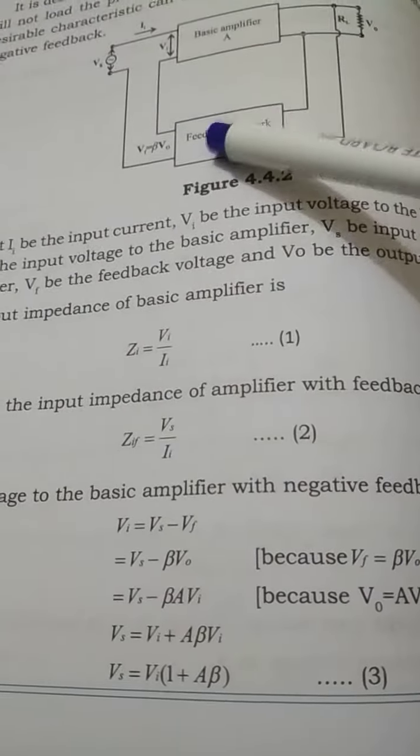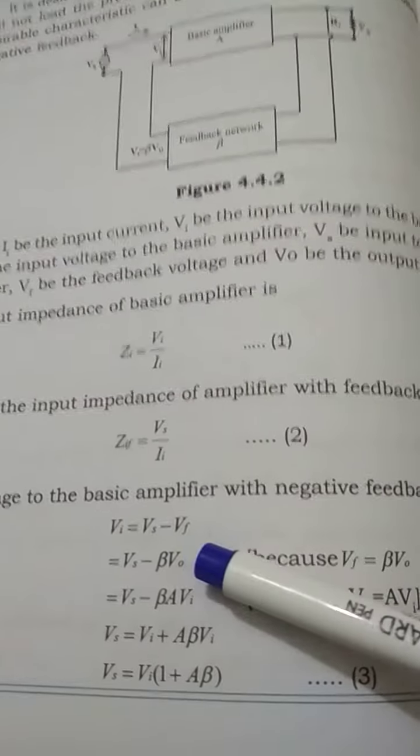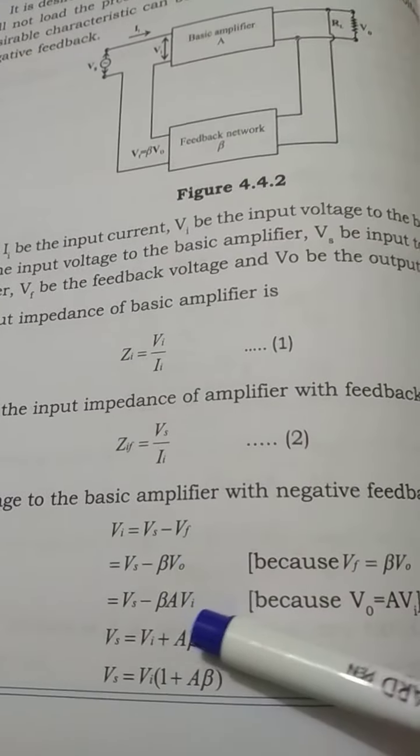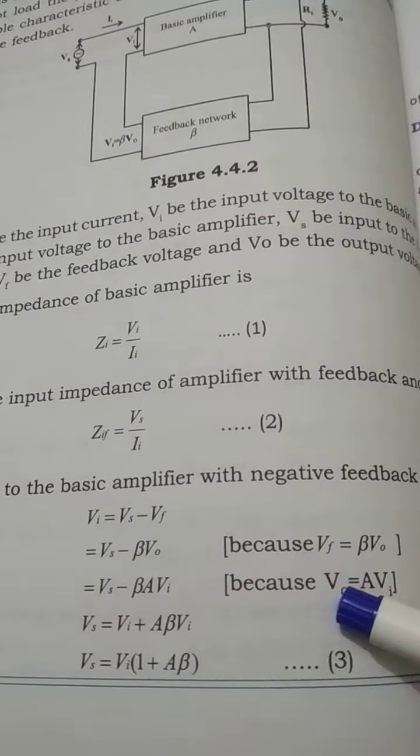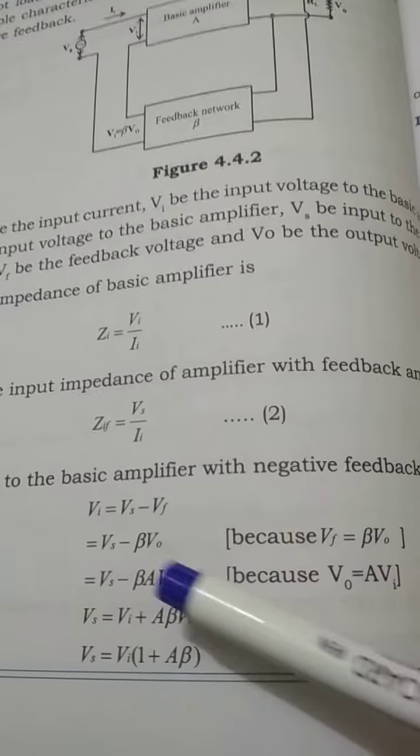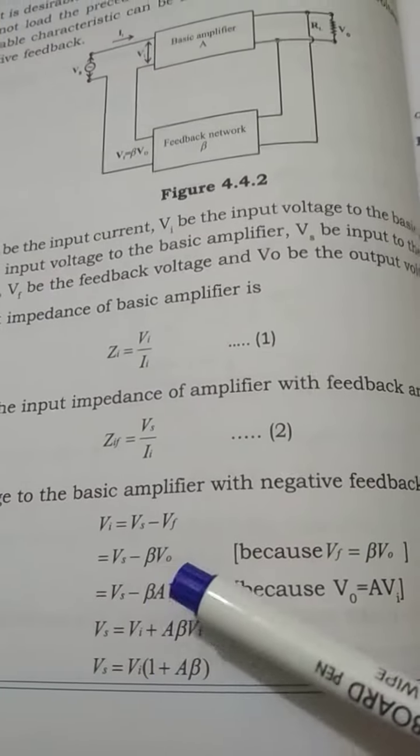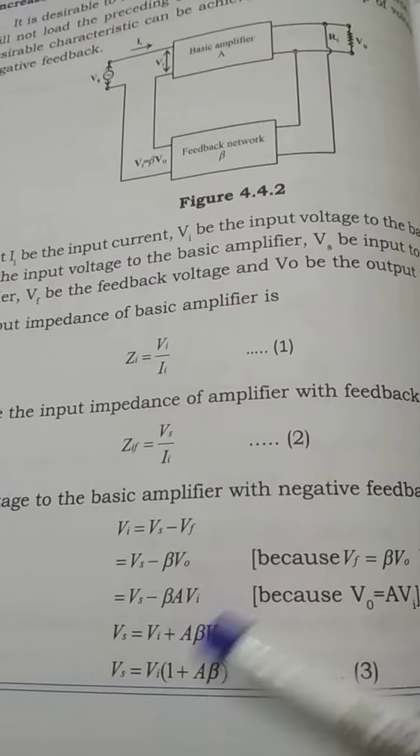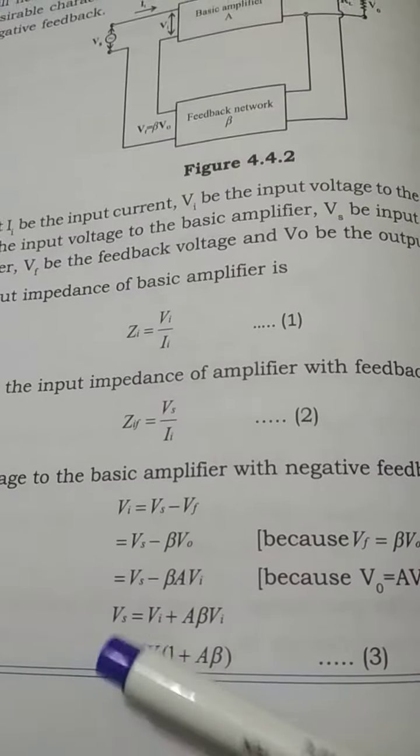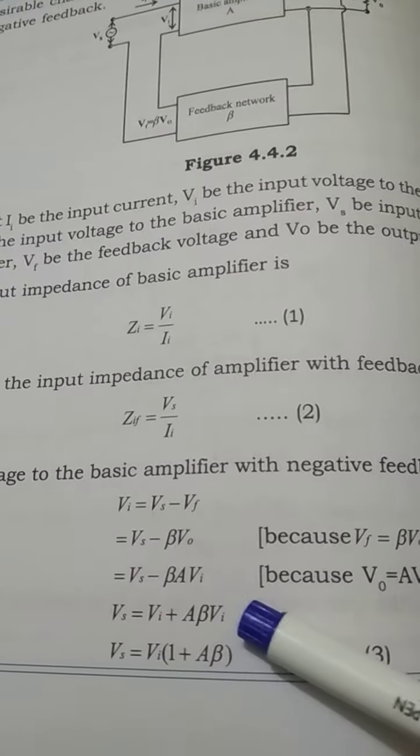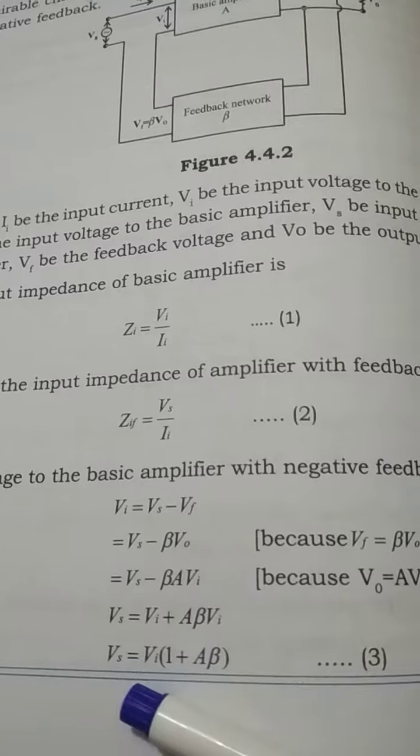We have substituted here, and again for V0, we'll substitute as A times Vi. V0 is nothing but equal to A into Vi. So you got two terms in Vi. We will group it together. Your supply voltage Vs is equal to Vi plus A*beta*Vi. Take out Vi common, you get Vs as Vi times (1 plus A*beta).